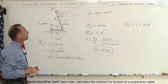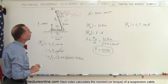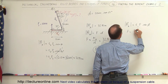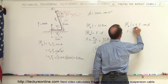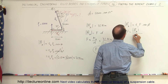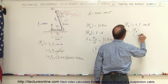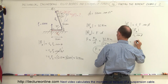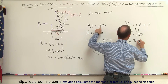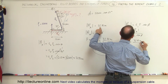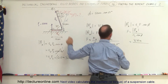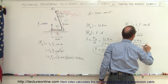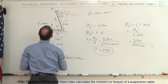So the force equals the moment divided by R1 times the sine of phi. That would be 72 Newton meters divided by R, which is 0.5 meters, times the sine of phi. Now we need to find phi. What is phi equal to?